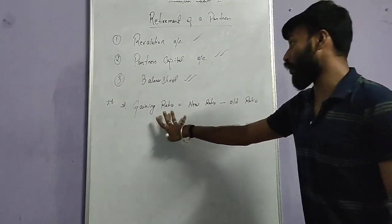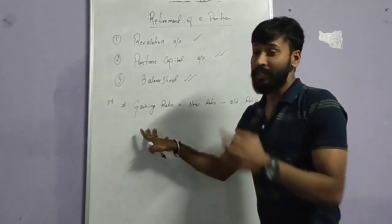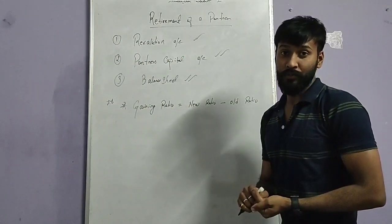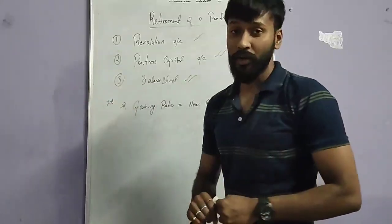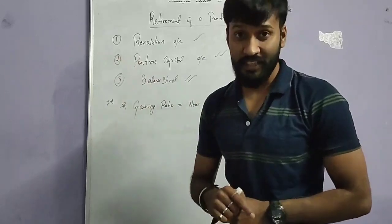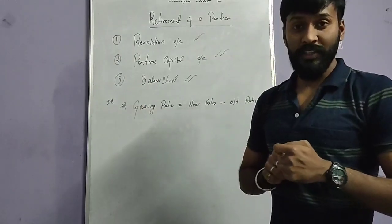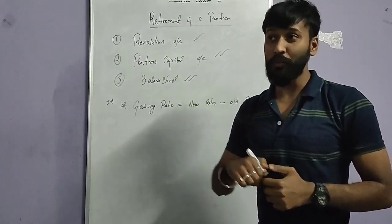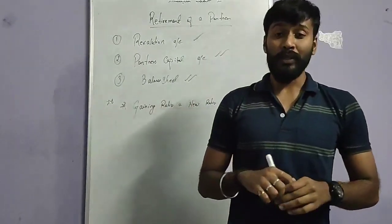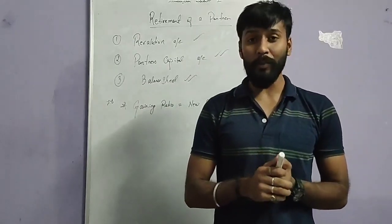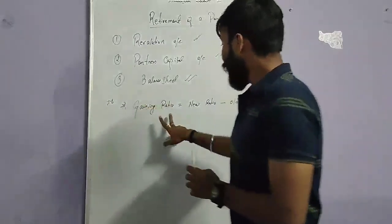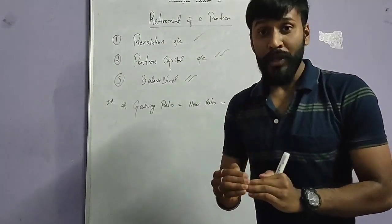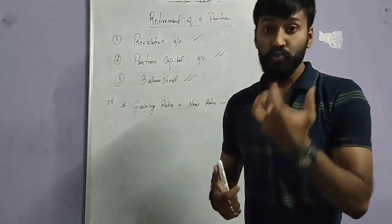This is the most important calculation we need to find out in the retirement of a partner, because with this gaining ratio, the partner who will be retiring from the business — we have to pay the goodwill amount. Without this gaining ratio, we cannot distribute the goodwill amount to the retiring partner. So this gaining ratio is very much important in this chapter. In the admission of a partner, the sacrificing ratio was important — with the sacrificing ratio, the amount which the new partner brought was distributed among the old partners. Now in the retirement of a partner, gaining ratio is used to calculate and pay the goodwill amount to the retiring partner.